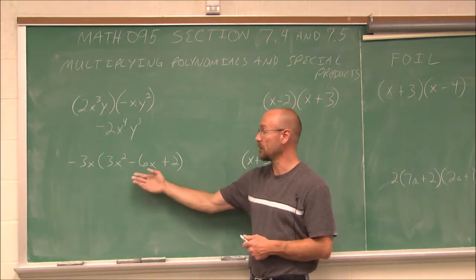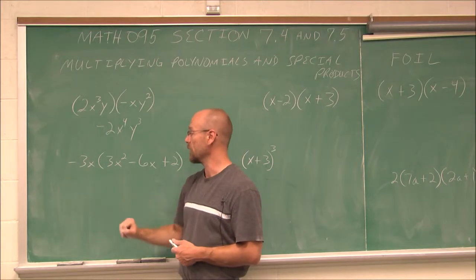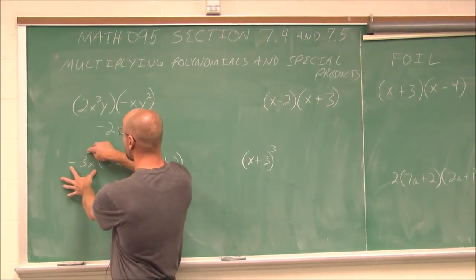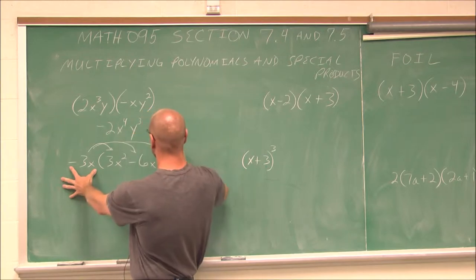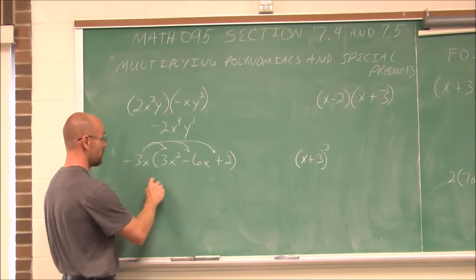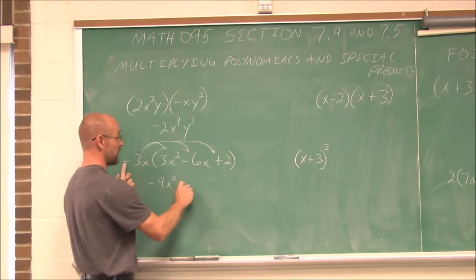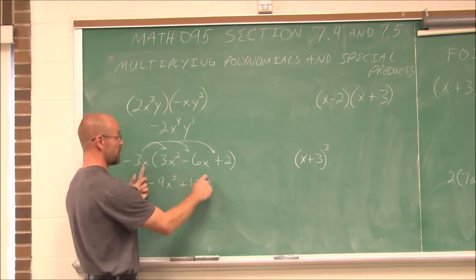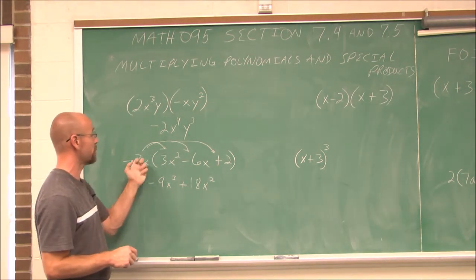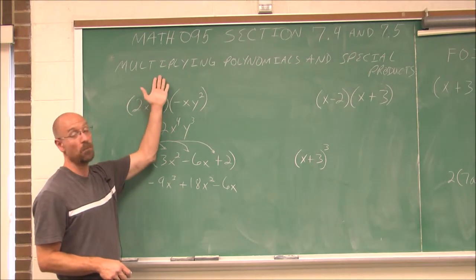What if we're multiplying a second-degree polynomial — a trinomial with three terms — by a monomial? We can use the distributive property. Distributive property says I have to multiply this term to all the other terms. I like to use arrows to keep track. So negative 3x times 3x squared is negative 9x cubed; negative 3x times negative 6x is positive 18x squared; and negative 3x times 2 is negative 6x. So we can use distributive property to multiply polynomials.